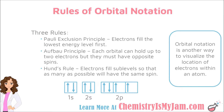The second rule is the Aufbau Principle. The Aufbau Principle says that each orbital can hold up to two electrons, but they must have opposite spins. We indicate that by having one arrow going up and one arrow going down. So within each orbital, within each box, you should have an up arrow and a down arrow.